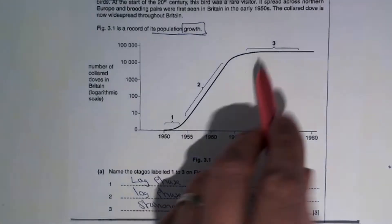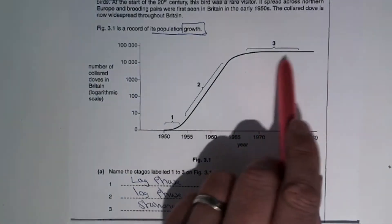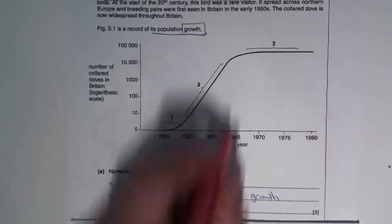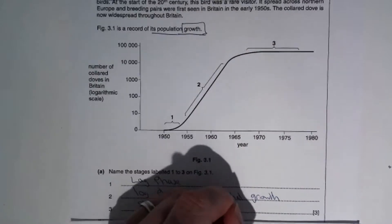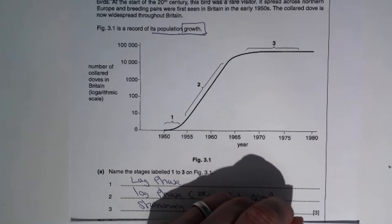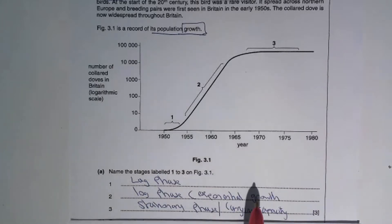Right. We say that the population, that the environment has reached, the habitat has reached carrying capacity. So you could say carrying capacity. That's the maximum size of the population that habitat will sustain.